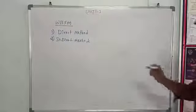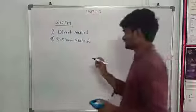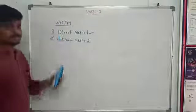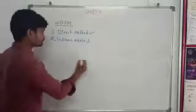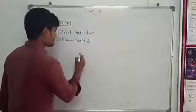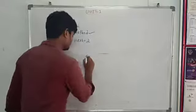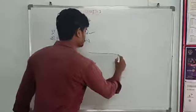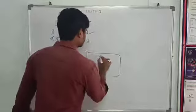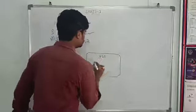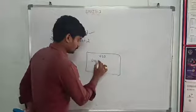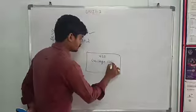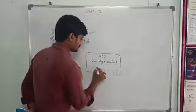First of all, what is the direct method? How do we generate wide band FM? In the direct method, we have a voltage controlled oscillator, that is the VCO — Voltage Controlled Oscillator.